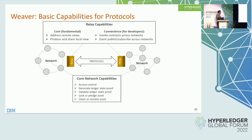Here's the set of operations each network needs to perform to run the desired protocols: access control, the ability to generate proofs of ledger state, the ability to independently validate such ledger state proofs — so one network can validate another's proof without privileged access to that network's ledger — and the ability to lock or pledge assets and then claim them. The ability to lock assets in a time-bound manner is a key enabling feature for asset transfers or exchanges, and most permissioned networks today have that capability.